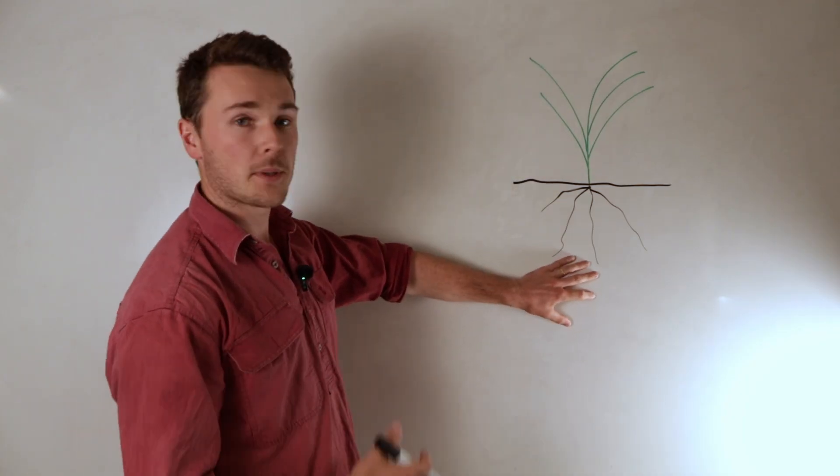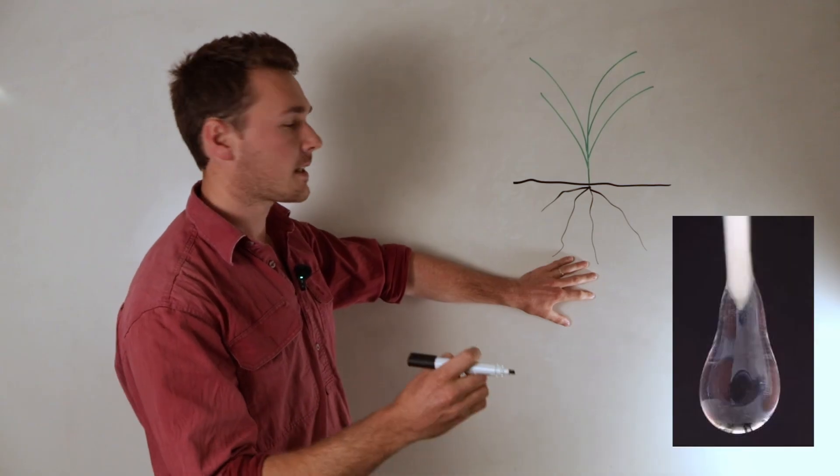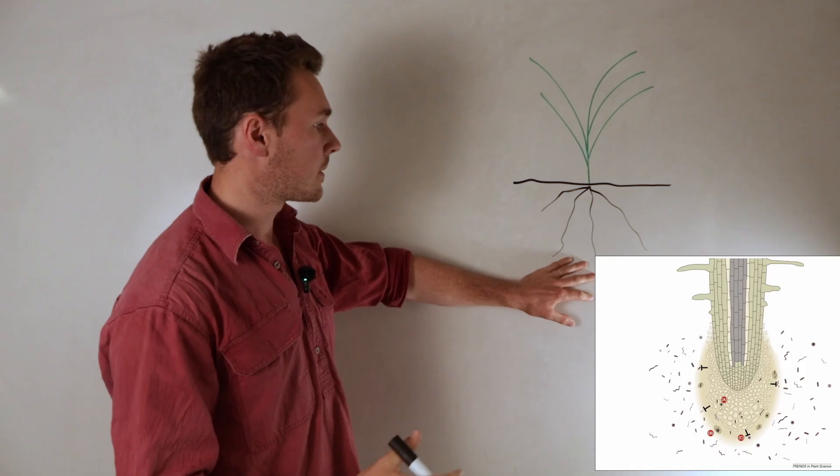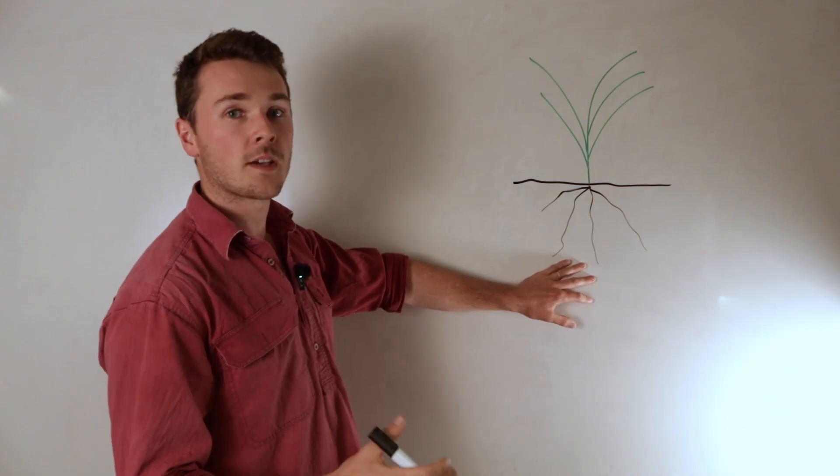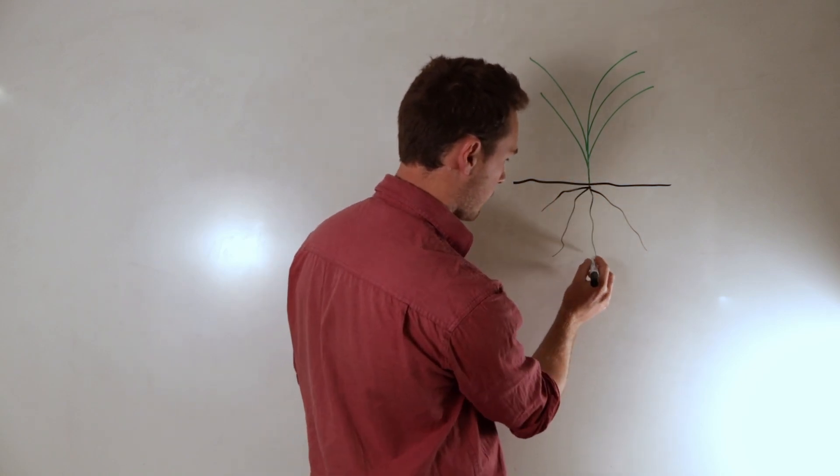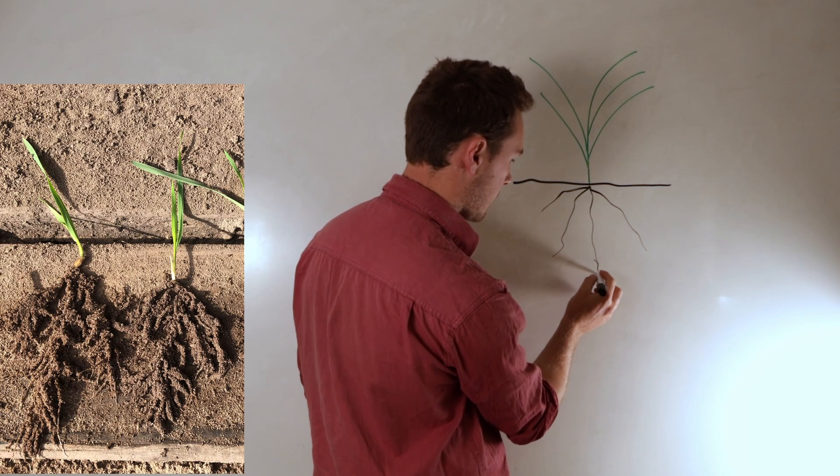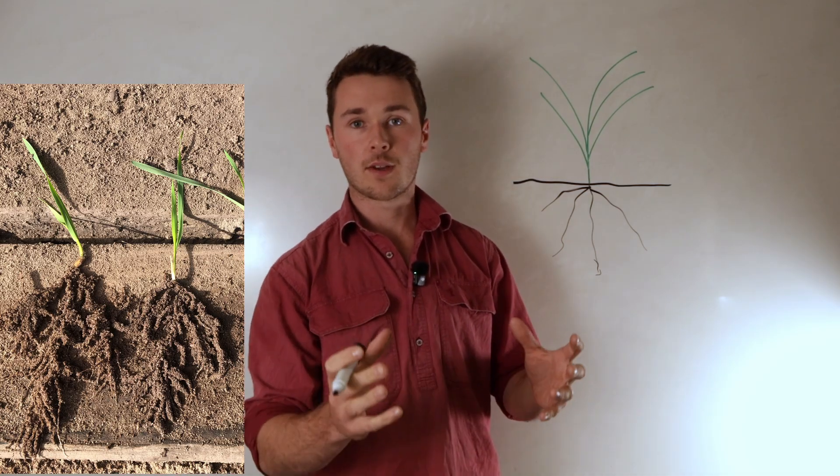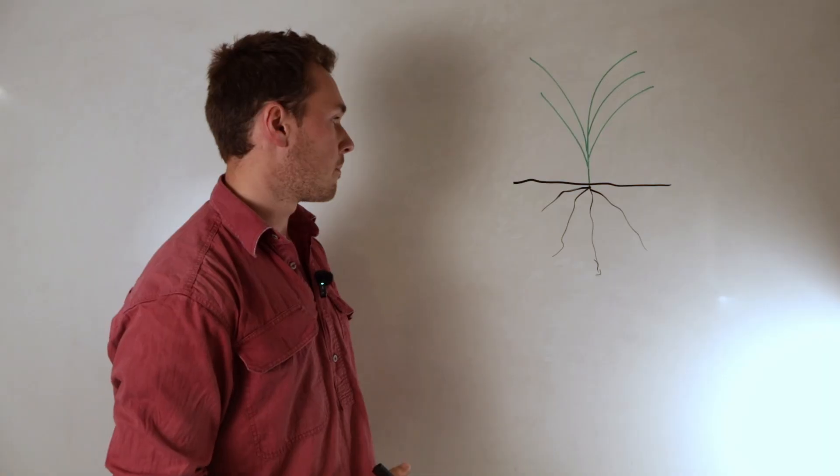A root exudate is what the plant produces through its roots. It is a substance filled with carbohydrates, proteins, lipids, and different compounds to feed the soil biology. The plant takes photosynthates and pushes them out through the root into the rhizosphere, which is about a 1-2 mm zone around the roots filled with biology.